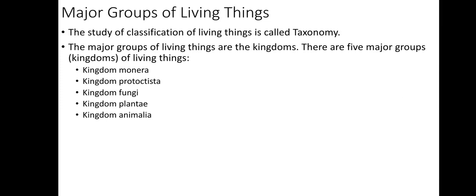The major groups of living things are the kingdoms. There are five major kingdoms of living things. The first one is Kingdom Monera, the second one is Kingdom Protista, the third one is Kingdom Fungi, the fourth one is Kingdom Plantae, and the fifth one is Kingdom Animalia. We will talk about each one of them in our next videos.